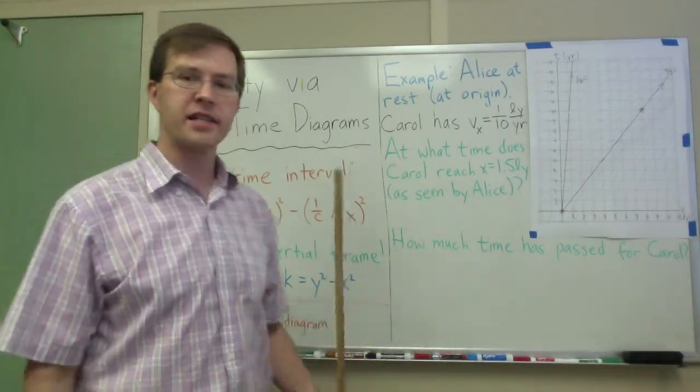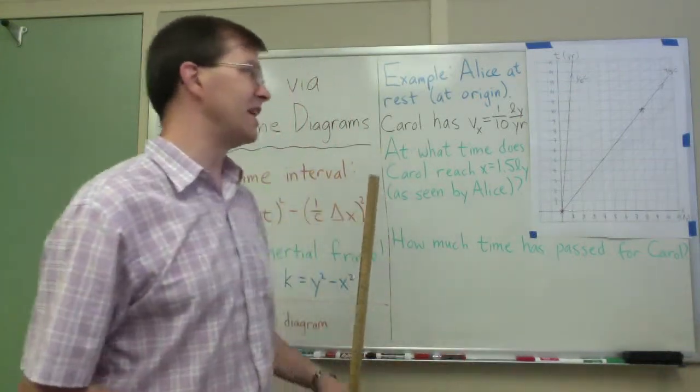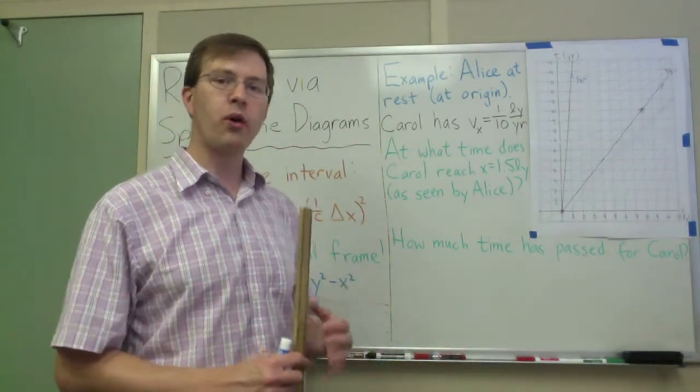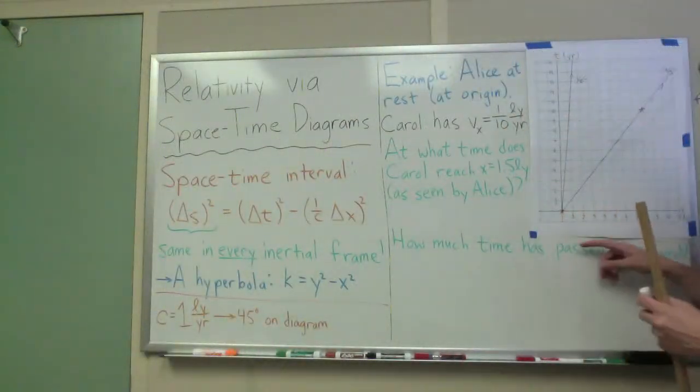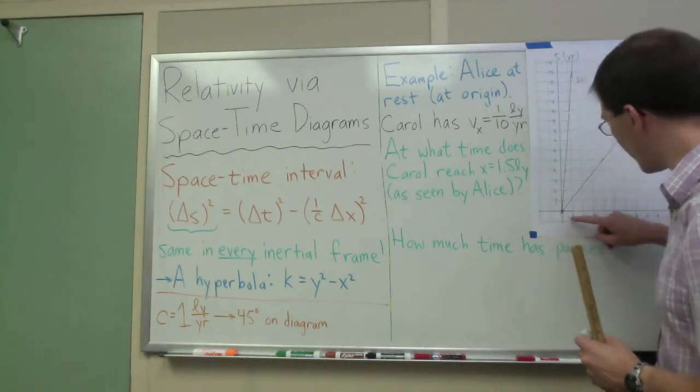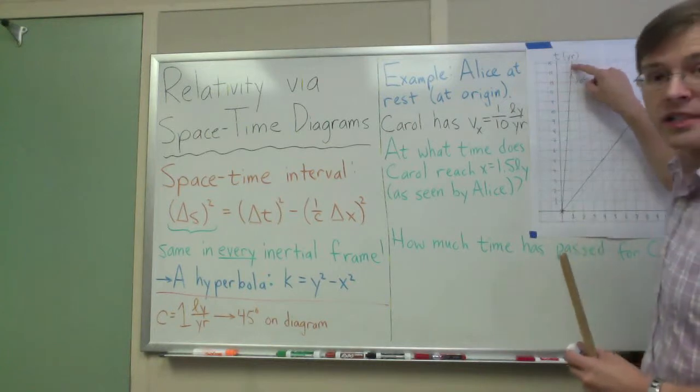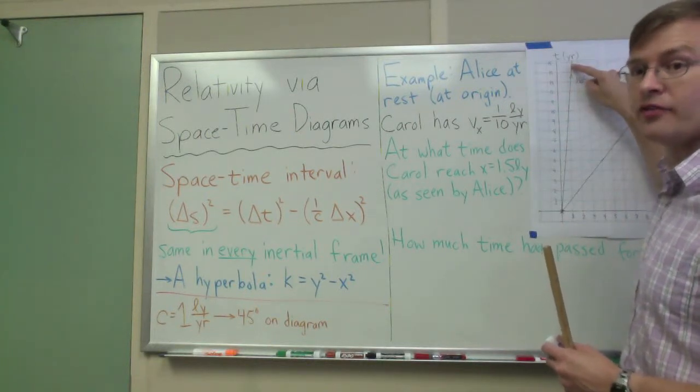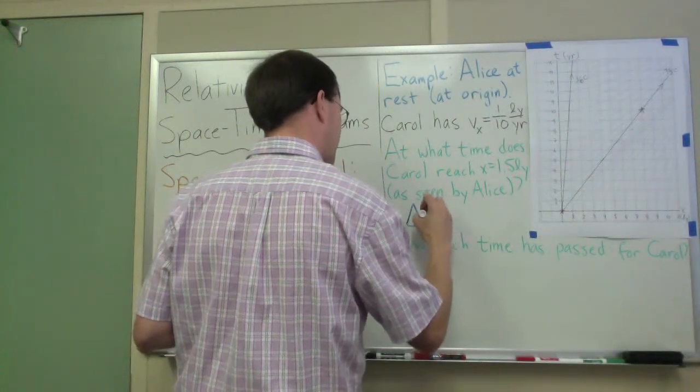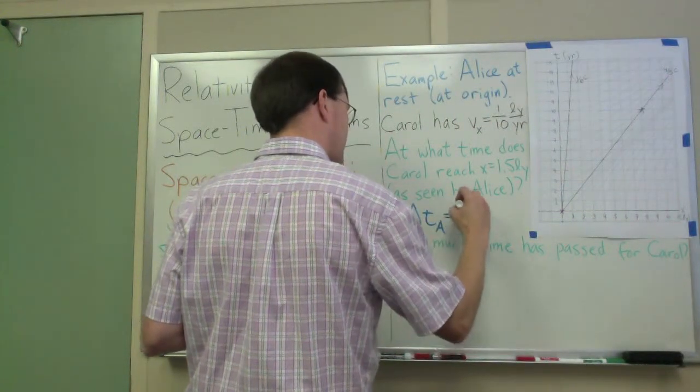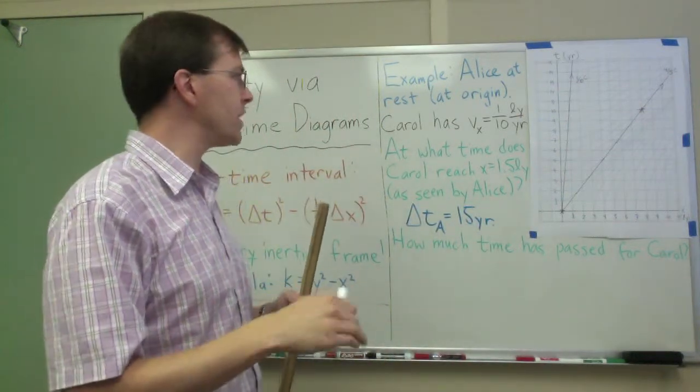The first question is: as seen by Alice, at what time does Carol reach a distance of 1.5 light years from where she started? Well, I can go up here to 1.5 light years - looks like it's going to be right here. Trace it up - by no coincidence at all, 1.5 light years takes 15 years. So the time it takes, as seen by Alice, is 15 years. That's an easy calculation.